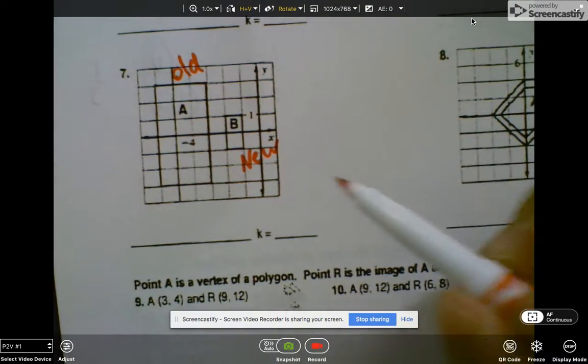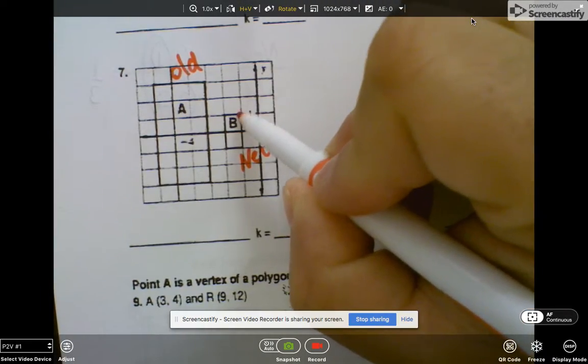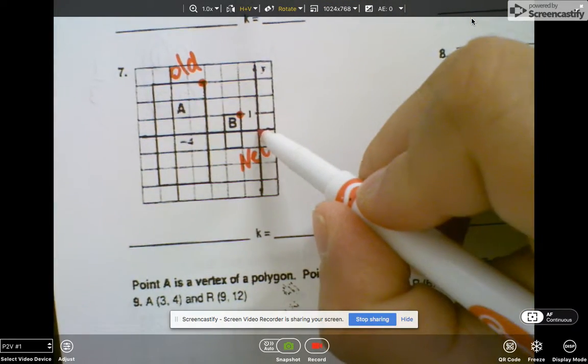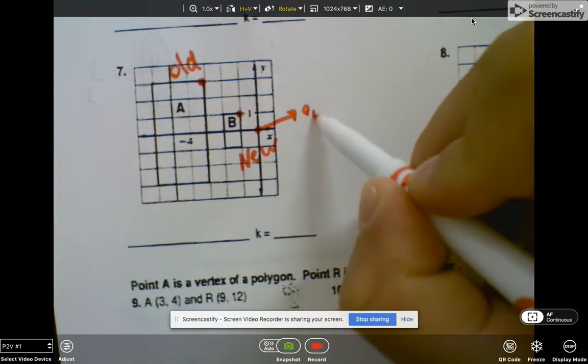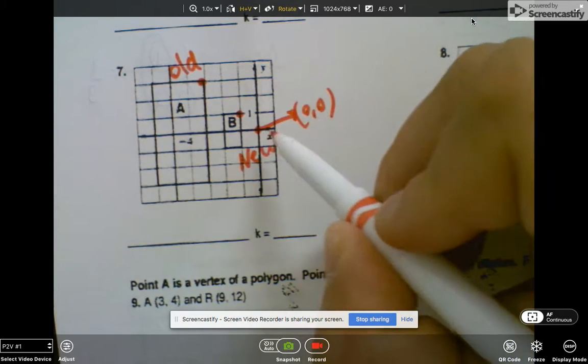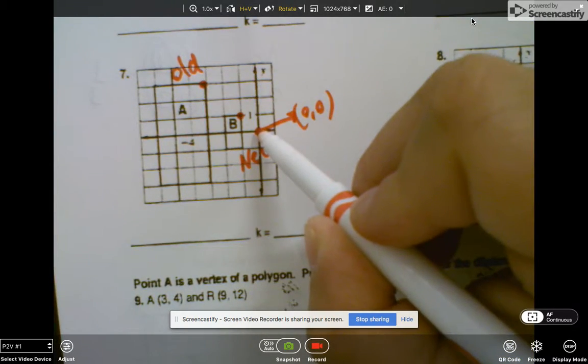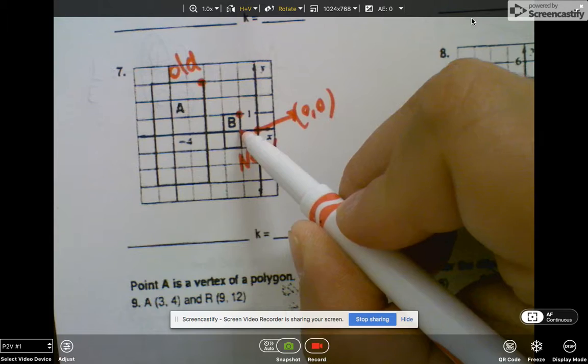When I do this one, I'm going to just choose any two coordinates. So I'll choose this corner and this corner. This is my origin right here, so that's zero comma zero, and it looks like it goes by one. So this new B is one negative one.